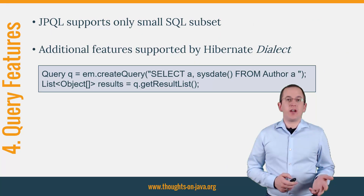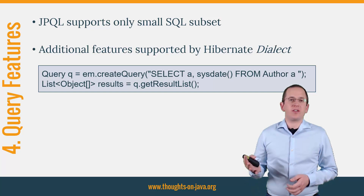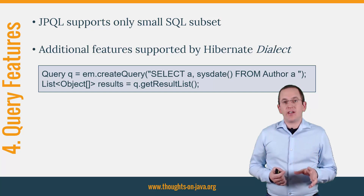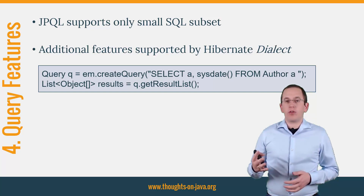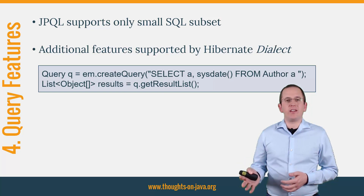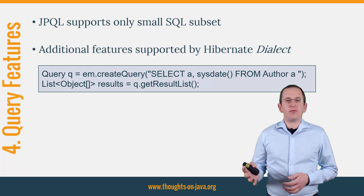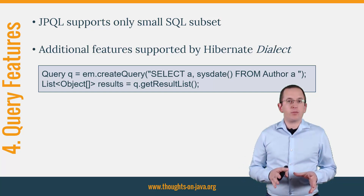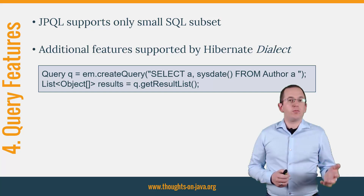4. MySQL-specific functions and data types. As with every other database, MySQL extends the SQL standard with a set of custom functions and data types. Examples are the JSON data type and the SYSDATE function. These are not supported by JPA, but thanks to Hibernate's MySQL dialect, you can use them anyway. If you find a function or data type not supported by Hibernate's MySQL dialect, you can use an attribute converter to convert the data type to a supported one, and the JPQL function function to call any function within a JPQL query. Keep in mind that by using database-specific functions or data types, you bind your application to a specific database.